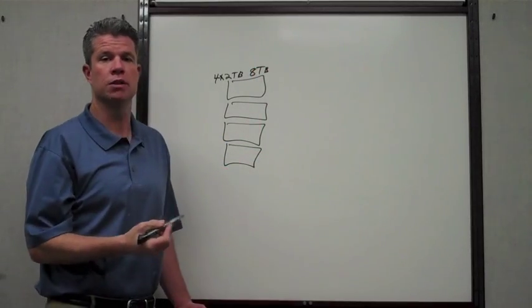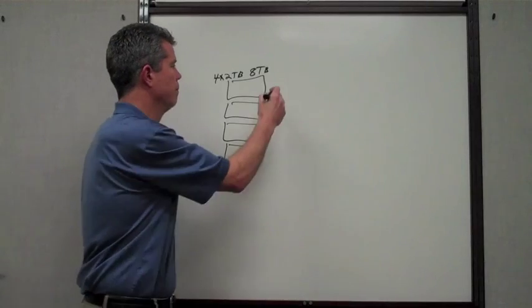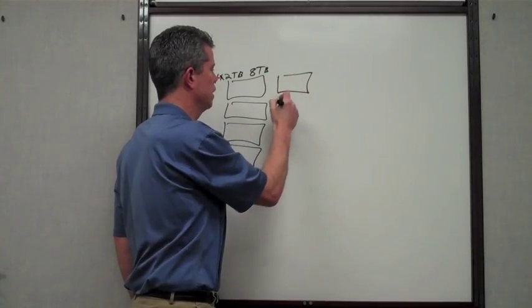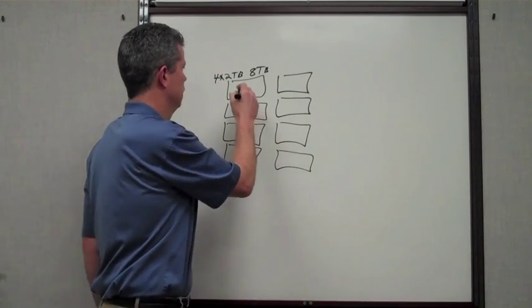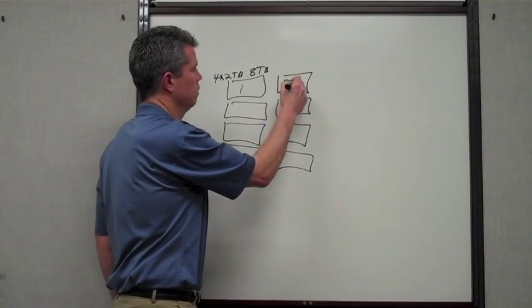And because we want to make sure that it's a highly available system, we've got a mirrored pair for each one of these nodes. So you have one, and then mirrored one.